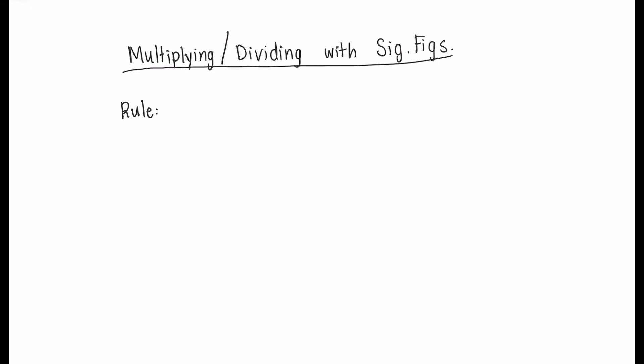Let's start with the rule that we're going to follow for multiplying and dividing, which is that we need to round to the least number of significant figures contained in the calculation.